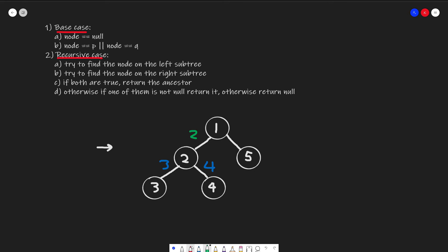Back at node 2, while processing the left and right subtrees, if both are non-null we propagate node 2 back up. Otherwise, if one of them is a non-null value we return that one; otherwise return null. For example, at node 5, we would return null because both subtree children are null. And then finally at node 1, we see we have 2 and null, so we return 2, which gives us our answer.